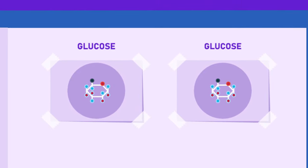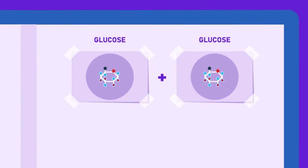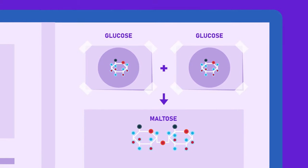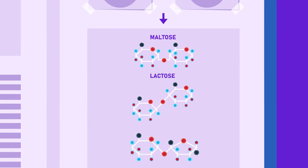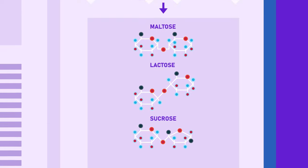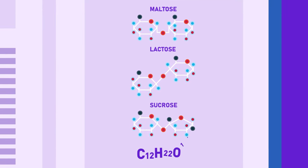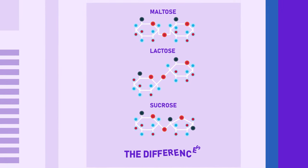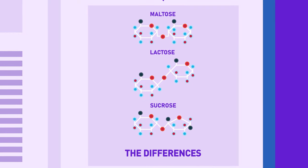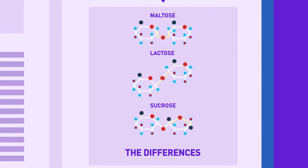Disaccharide structure molecules are made up of two molecules of simple sugars, condensed together. The most common types of disaccharides have 12 carbon atoms, with the general formula C12H22O11. The differences in the disaccharides are due to the different atomic arrangements within the molecule.